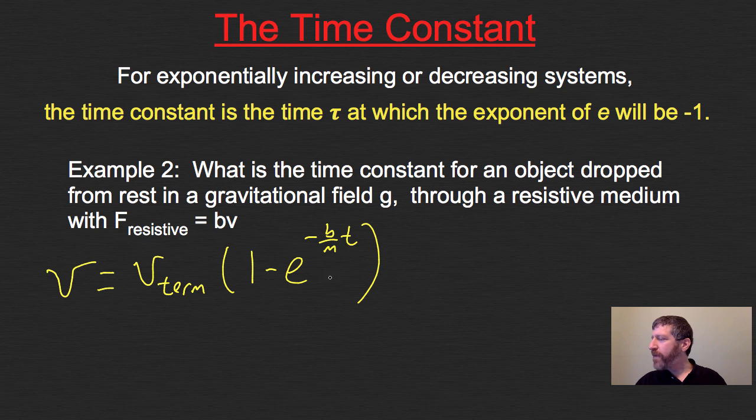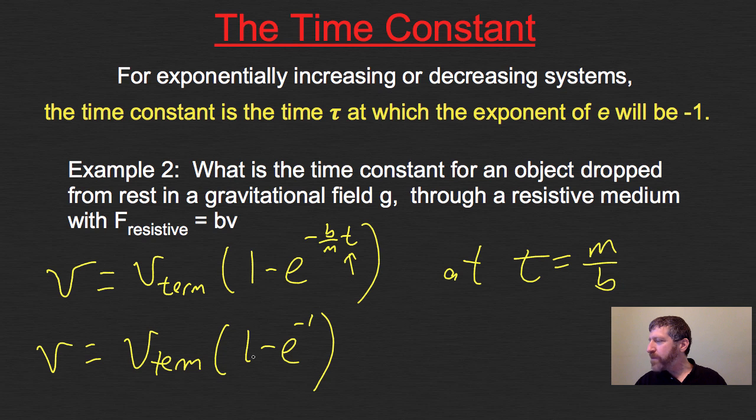This is the same type of exponent. So at t = m/b, V equals V_terminal * (1 - e^(-1)). Once I put in m/b for that time, I get negative 1 in the exponent. And 1 - e^(-1) is approximately 0.632. So again, we have the same time constant: tau = m/b.